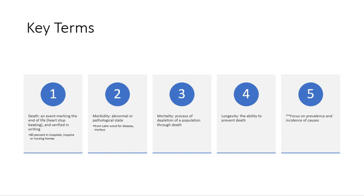First of all, a death is an event that marks the end of life. That's measured by the heart not beating any longer and also verified in writing by a medical professional. Morbidity has to do with an abnormal or pathological state. It comes from the Latin word for disease, morbus, and it's not necessarily associated with death but is highly correlated.